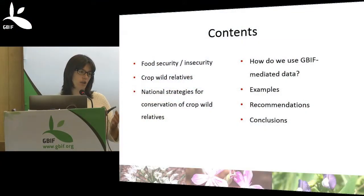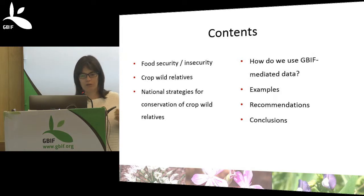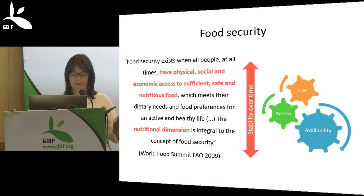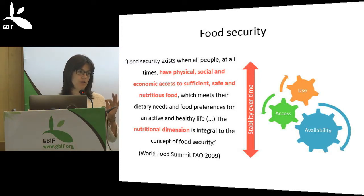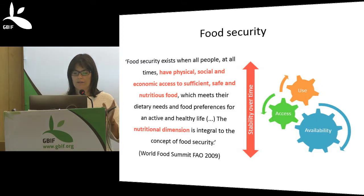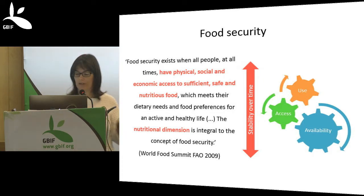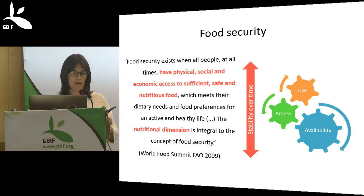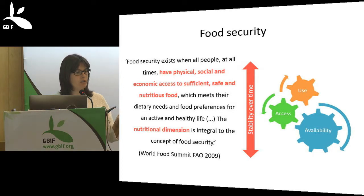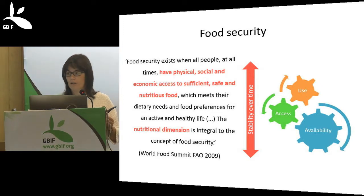Food security exists when all people at all times have physical, social, and economic access to sufficient, safe, and nutritious food. This concept was introduced by FAO in 2009 at the World Food Summit and includes a new nutritional dimension. It is supported by four pillars: availability of resources, physical, social, and economic access, utilization of food taking into consideration basic nutrition knowledge, and stability over time of these three pillars.